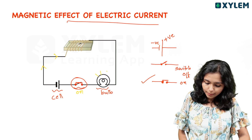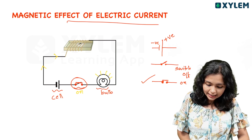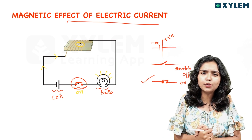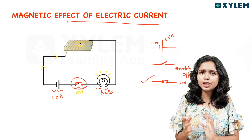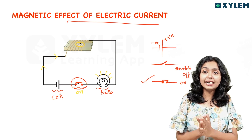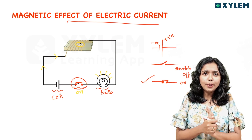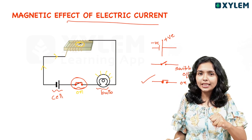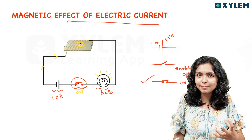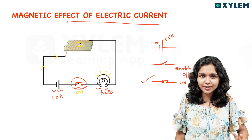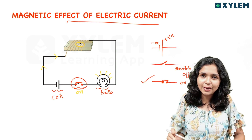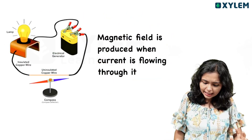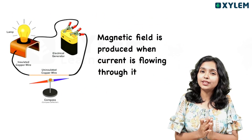When electric current is passed, we can observe the bulb glow. We can also observe that the compass needle gets deflected. When an electric current is passed, there will be a magnetic effect. When a conductor passes current, it will act as a magnet. We call this the magnetic effect of electric current.